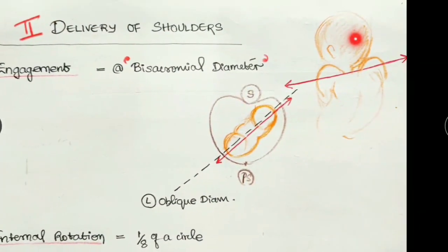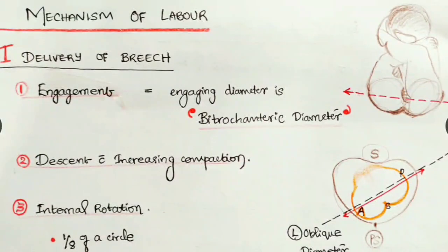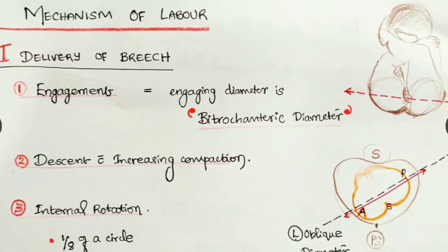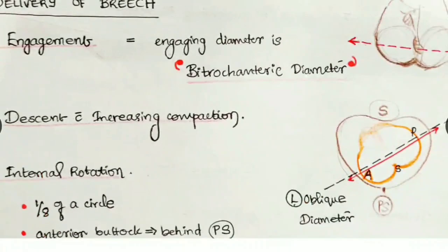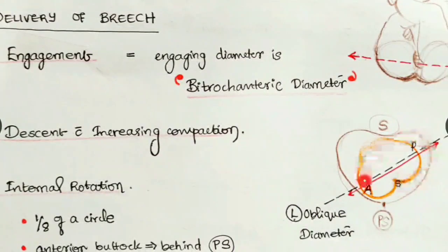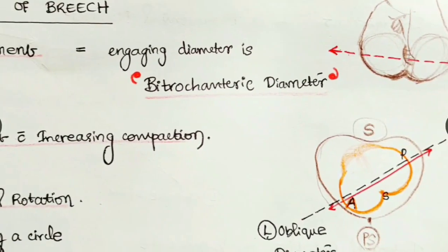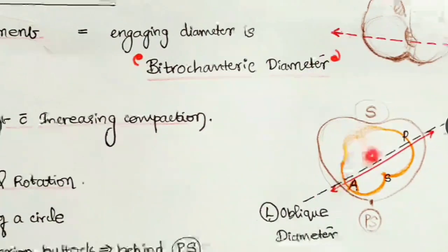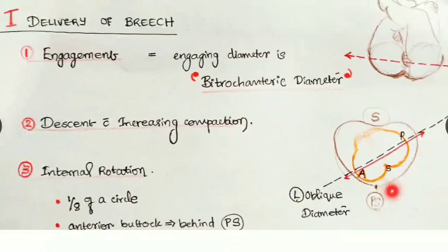Coming to the delivery of the breech: the engagement diameter is the bi-trochanter diameter - between the two trochanters. This is the buttocks viewed from above as a cross-section - these two points connecting give the bi-trochanter diameter. The common position is the left sacro-anterior position, where this bi-trochanter diameter lies in the left oblique diameter axis. That is engagement.